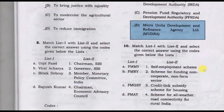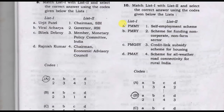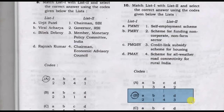Pick the odd one out from list one and list two. The answer is PMMI. Option B is the correct answer.